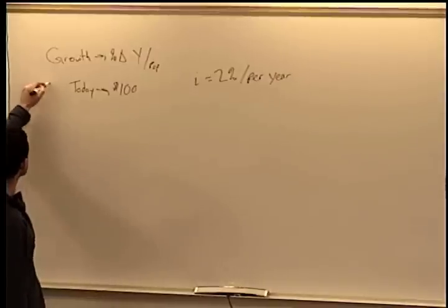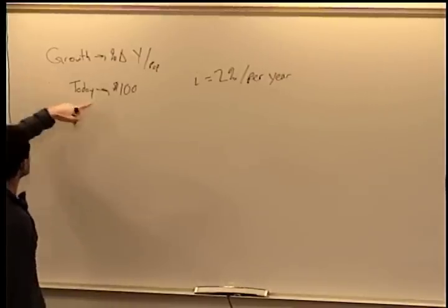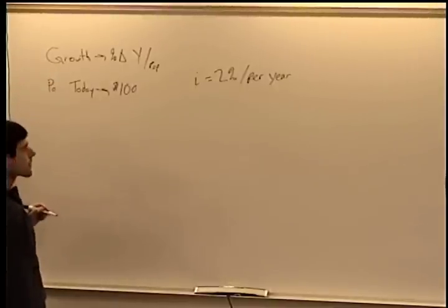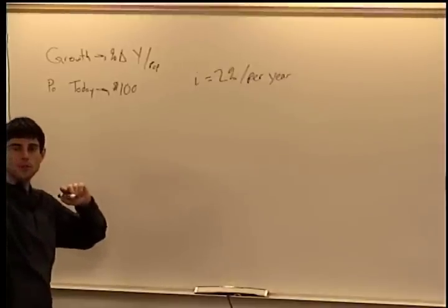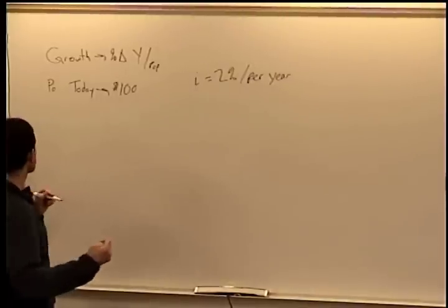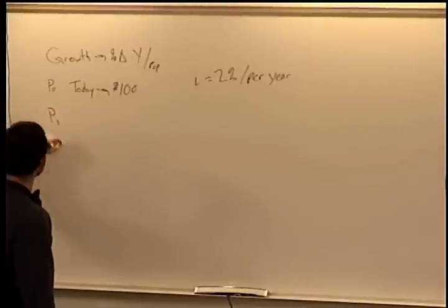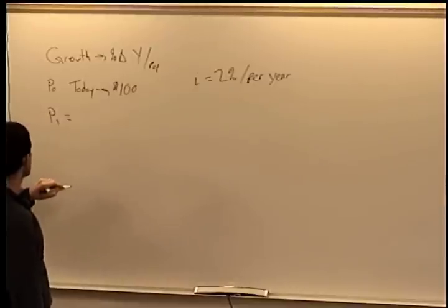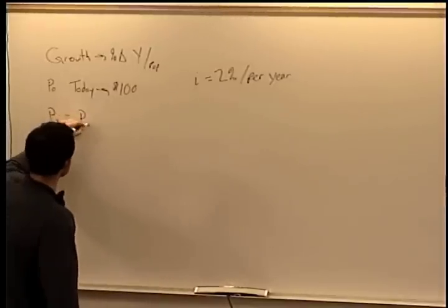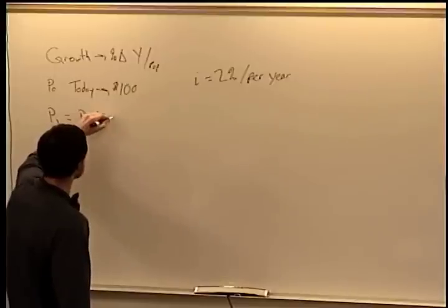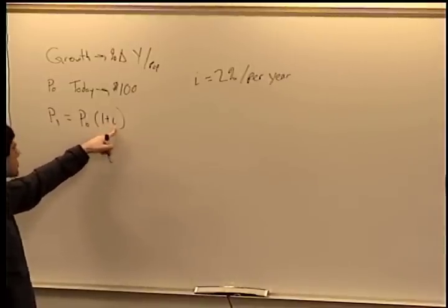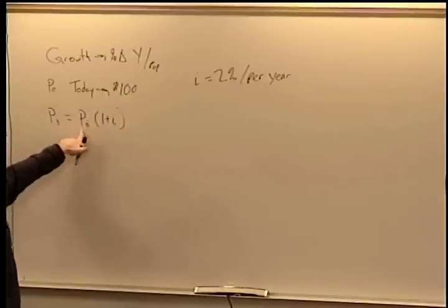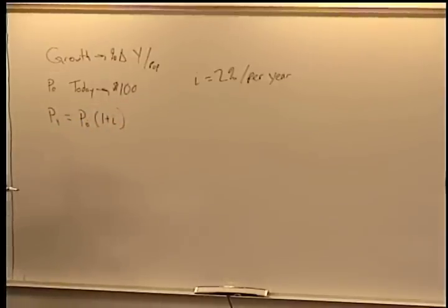Formally: call your starting amount P0. P1 is one year from now, P2 is two years from now, and so on. P1 equals P0 times (1 + i), so 1.02 times $100 gives us $102. In one year from now we'll have $102.